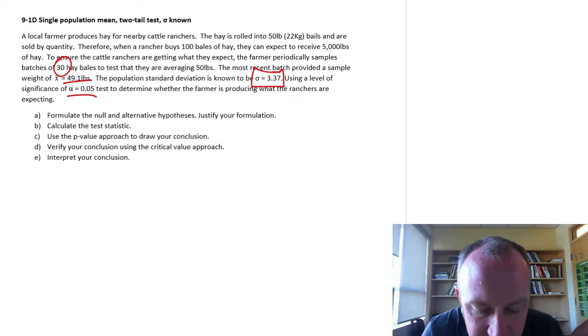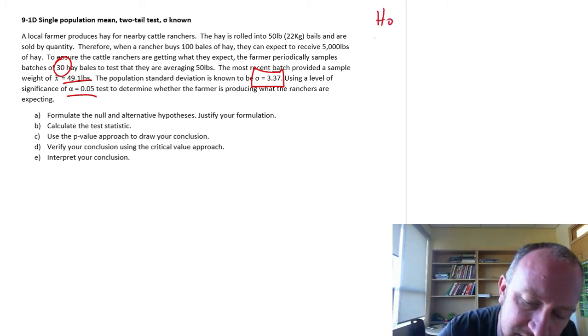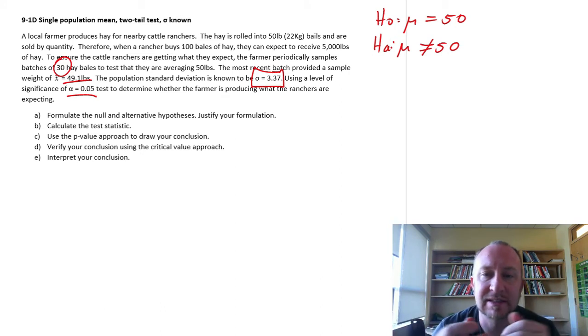Test to determine whether the farmer is producing what the ranchers are expecting. So the ranchers are expecting 50 pounds. We want to formulate that hypothesis in such a way that we can see is it equal to 50 pounds or is it not equal to 50 pounds. So again, two-tailed test.